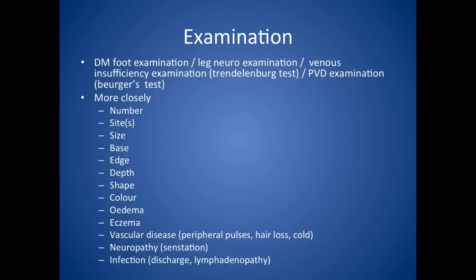For examination, there are various things to bear in mind, such as whether you need to do a diabetic foot examination or a leg neuro examination. If it's venous insufficiency, think about the Trendelenburg test, which is used to determine the site of valve incompetence. You'd ask the patient to lie down, elevate their leg, empty the veins by massaging distally to proximally, use a tourniquet to occlude the superficial veins in the upper thigh, then ask the patient to stand. If the tourniquet prevents the veins from refilling rapidly, the site of the incompetent valve must be above this level.